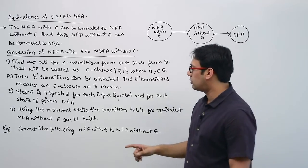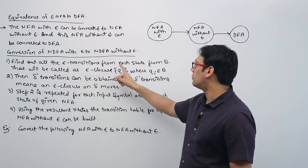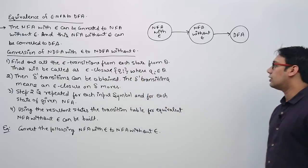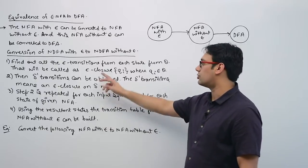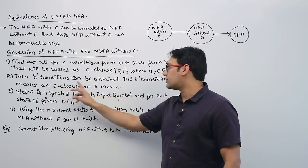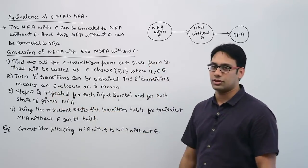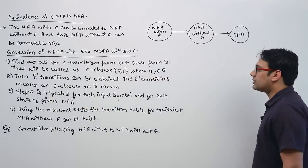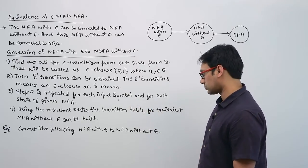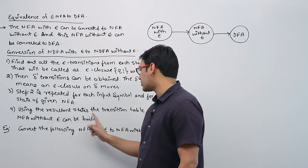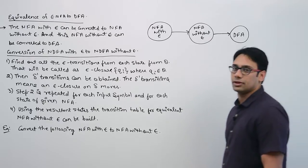The procedure is: first, find all Epsilon transitions from each state Q — this is called the Epsilon closure. For every state, find its Epsilon closure, then the delta-dash transition can be obtained. Step 2 is repeated for each input symbol and each state of the given Epsilon-NFA. Then, using the resultant state transition table, an equivalent NFA without Epsilon can be built.